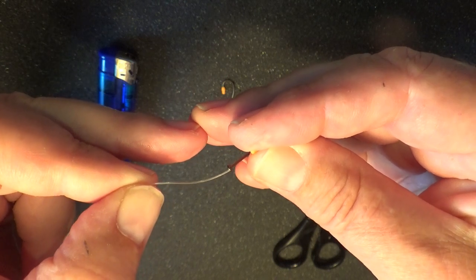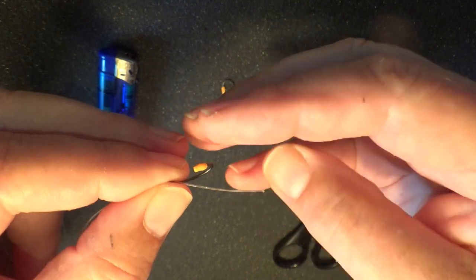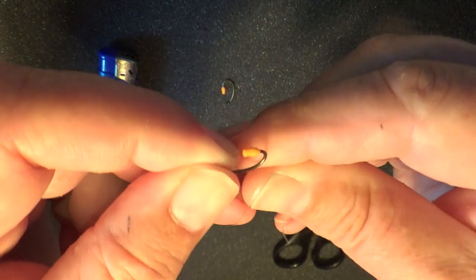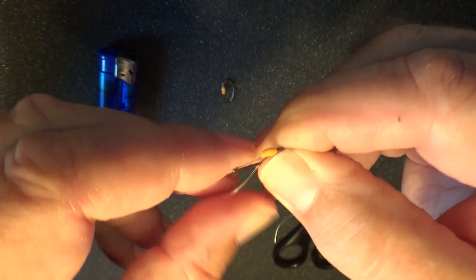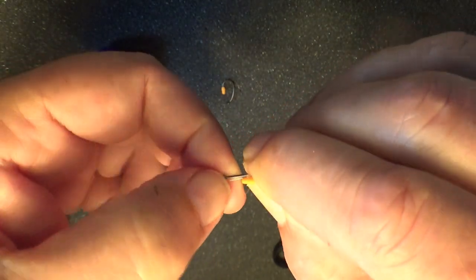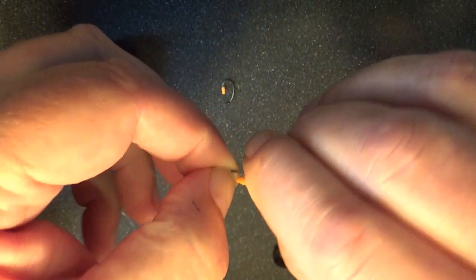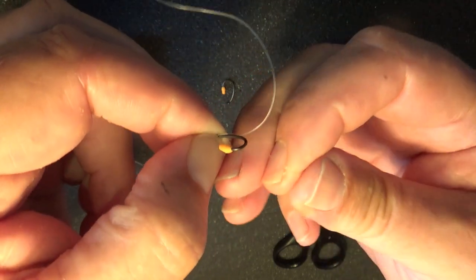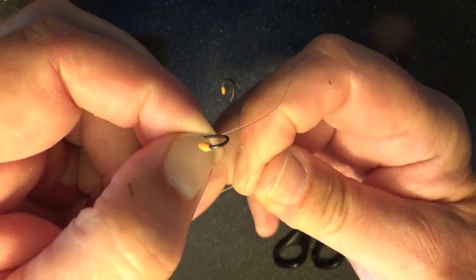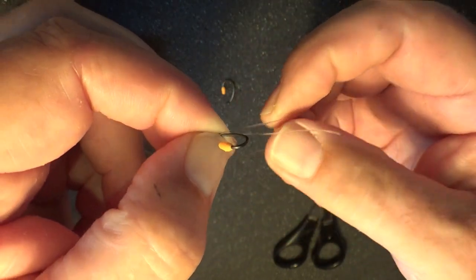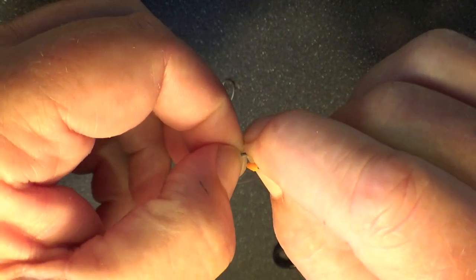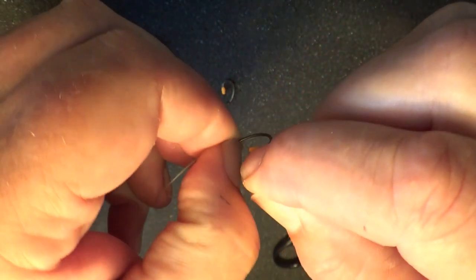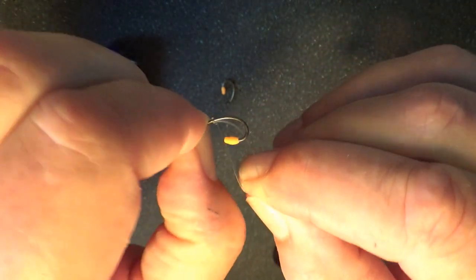Through the eye, form a loop, adjust the loop, adjust the length of the tail, grip it tightly, whip round the shank eight times.